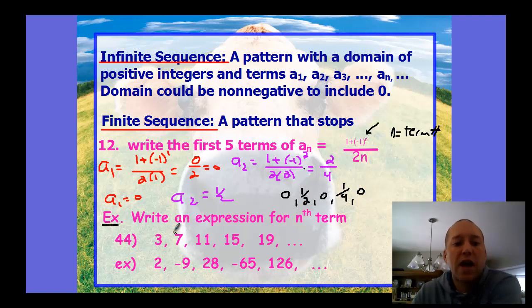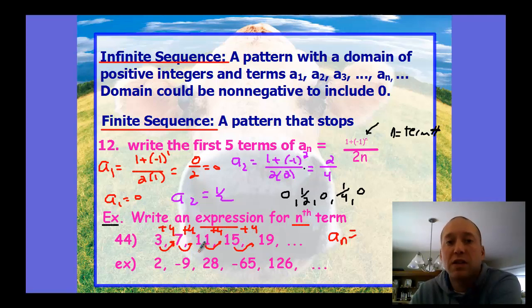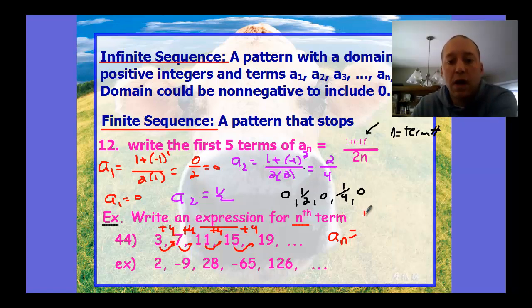This example is looking the other way. If I have the pattern written for us, we can write the expression for the nth term - write a formula for the nth term. First look at the pattern: 3 to 7, 7 to 11, 11 to 15, 15 to 19. It's a pretty easy pattern - we're just adding 4. This tells me the change between numbers is constant. Whenever we have a constant rate of change, we know that's a linear equation. We should be pulling in our basic algebra within these contexts.